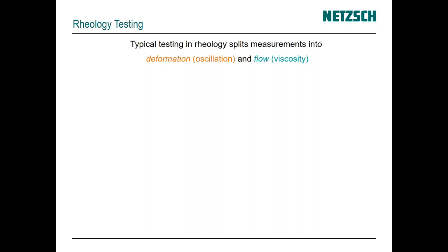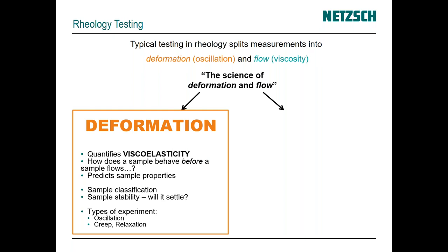In rheology we generally break testing up into two major categories. Deformation or oscillation is the first mode — cyclic testing, low amplitude non-destructive testing. The other category would be flow or viscometry, where we're shearing a material. When we do our oscillation tests we start quantifying the viscoelasticity in a material.